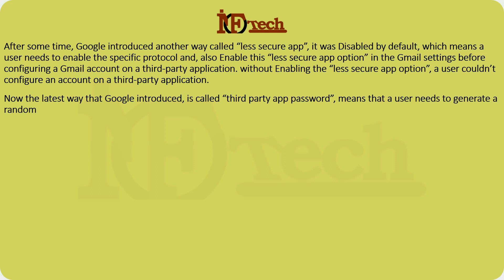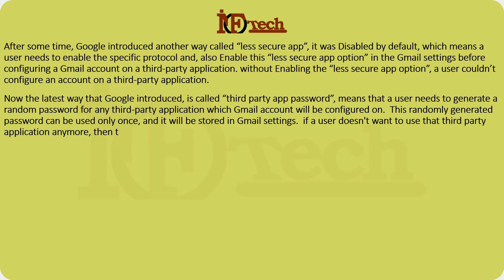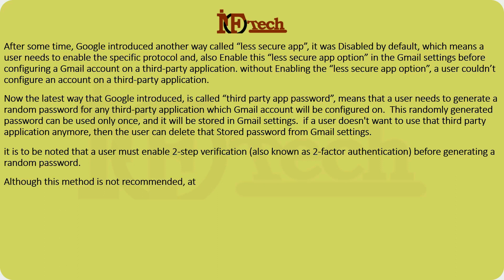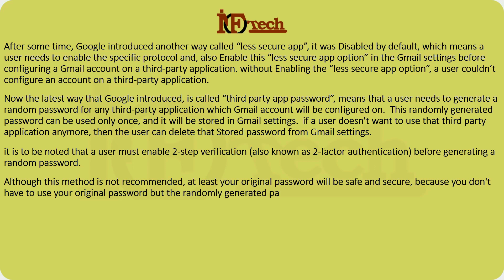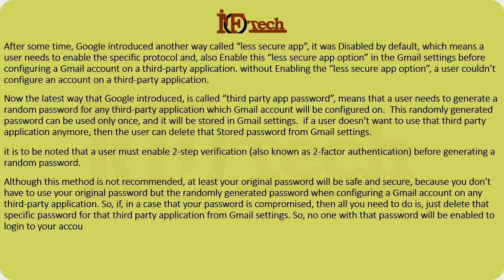Now the latest method Google introduced is called the third-party app password. A user needs to generate a random password for any third-party application on which the Gmail account will be configured. This randomly generated password can be used only once and will be stored in Gmail settings. If a user no longer wants to use that third-party application, they can delete that stored password from Gmail settings. It is important that a user must enable two-step verification (also known as two-factor authentication) before generating a random password. This way, your original password stays safe — if a password is compromised, just delete that specific password from Gmail settings and no one with that password will be able to log in to your account.